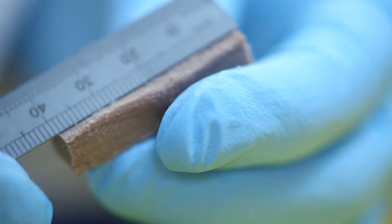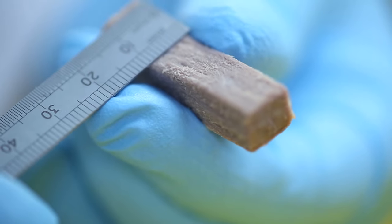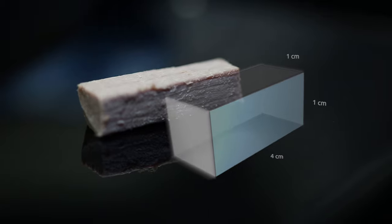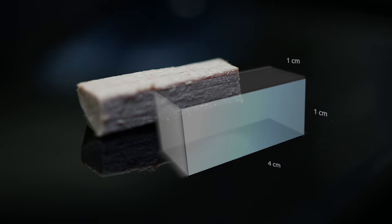In shear force testing, it is important to measure your cores precisely to ensure that they are uniform in size and shape. Cores should be 4 centimetres in length, 1 centimetre in height, and 1 centimetre in width.